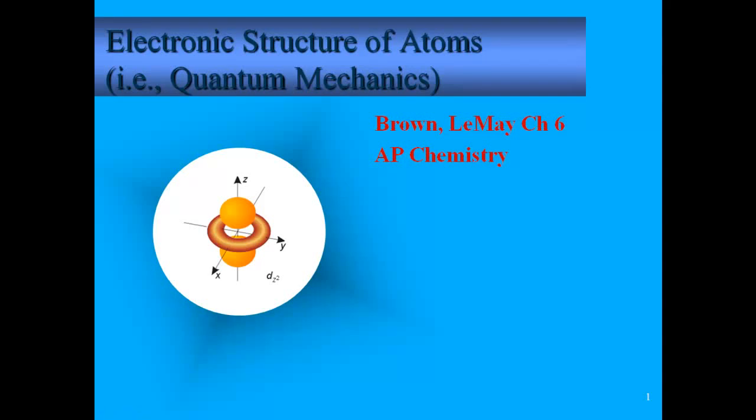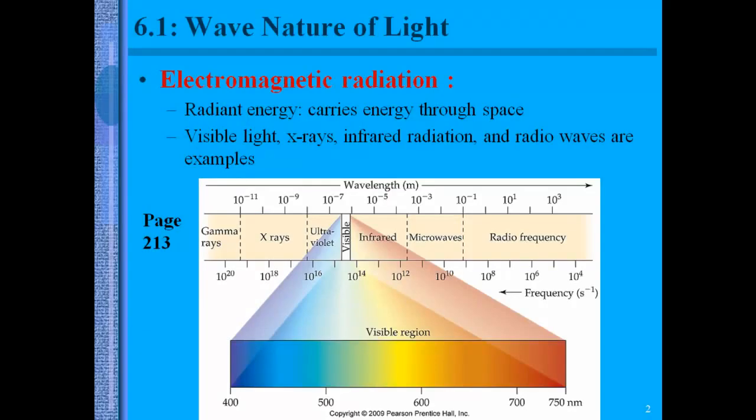Hello everybody and welcome to chapter 6, our first chapter of unit 3. We're going to cover the structure of atoms including quantum mechanics. First we want to talk about the wave nature of light and light will fall into the electromagnetic radiation spectrum.